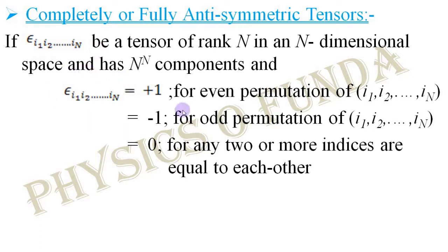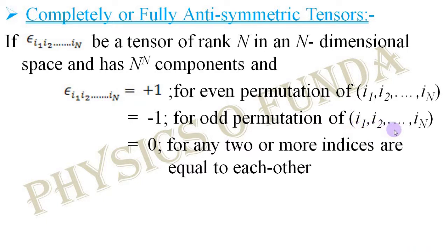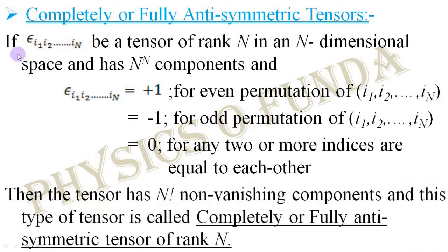Let us see the properties. First, for even permutation of the indices i1, i2, up to i_n, the corresponding components become +1. Second, for odd permutation of the indices i1, i2, up to i_n, the corresponding components become −1. Third, if any two or more indices are equal in any component — for example, i1 = i2, or i1 = i2 = i3 — then that component becomes 0. If all these properties hold simultaneously, then the given tensor has n! non-vanishing components, and this type of tensor is called a completely or fully anti-symmetric tensor of rank n.